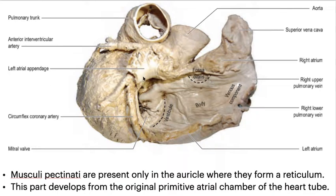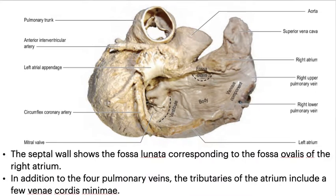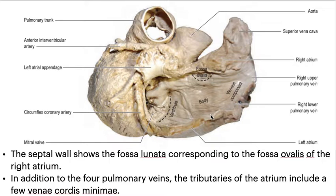Musculi pectinati are present only in the auricle, where they form a reticulum; this part develops from the original primitive atrial chamber of the heart tube. The septal wall shows the fossa lunata, corresponding to the fossa ovalis of the right atrium. In addition to the four pulmonary veins, the tributaries of the atrium include a few venae cordis minimae.